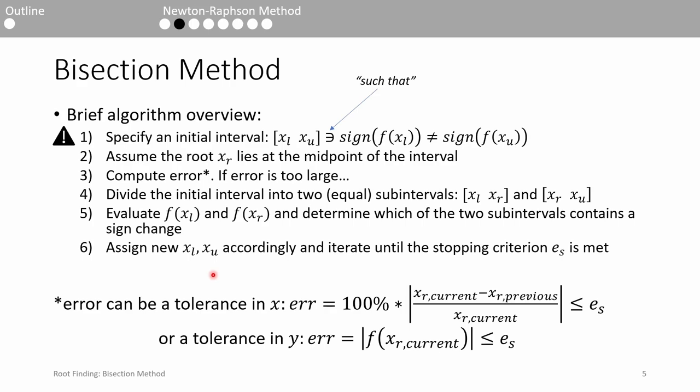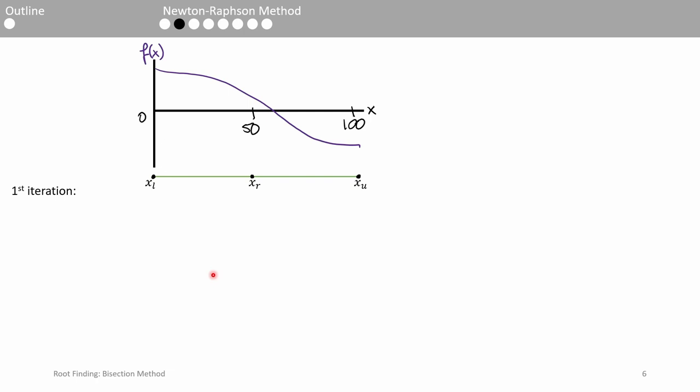Let's take a look at bisection visually. Let's say we want to find the root of this unknown function f(x). From the plot, we can see that the root occurs just after x = 50. For our initial guess, let's choose a conservative bracket. x_l = 0, and x_u = 100. We see that f(x_l) is positive,